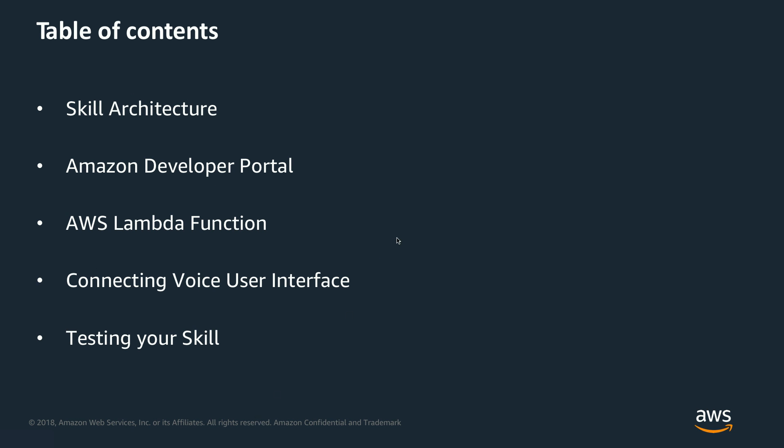Here, as you see on the screen, are the steps I'm going to follow to build an Alexa skill. First, I need to show you the skill architecture, and then we're going to set up or use an account for the Amazon Dev Portal. Next, we'll talk about the AWS Lambda function used to support the Alexa skill. The fourth step is to connect the skill we created in the portal with AWS Lambda. And the last thing is to test our skill to make sure it's doing what it's expected to do.